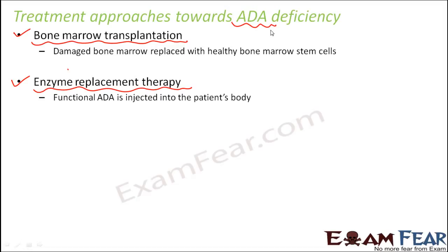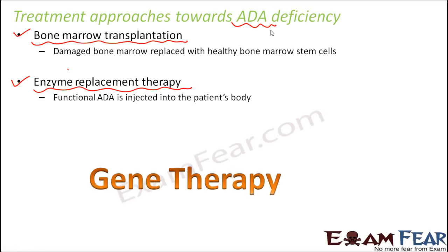For a permanent cure, the treatment must happen at the genetic level. For any disease, if you want a permanent cure, you must address the cause of the disease. Here, the cause is the missing gene for production of ADA. Only if we treat it at a genetic level can there be a permanent cure, and that is where gene therapy comes in.